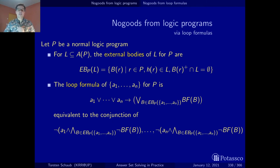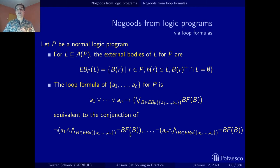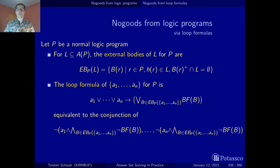There is one detail where it pays off that we have auxiliary atoms for the bodies. Here we would negate the conjunction of the positive and negative body literals, which would be quite cumbersome to handle. But since we have auxiliary atoms for the body, we can plug in the auxiliary atom that stands for the actual body at this spot.